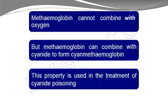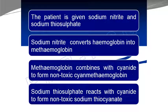In cyanide poisoning, the patient is first given sodium nitrite and sodium thiosulfate. Sodium nitrite converts hemoglobin into methemoglobin, which then binds with cyanide to form cyanomethemoglobin, which is less toxic. Sodium thiosulfate reacts with cyanide to further reduce its toxicity. In this way we can reduce the toxic effect of cyanide poisoning.